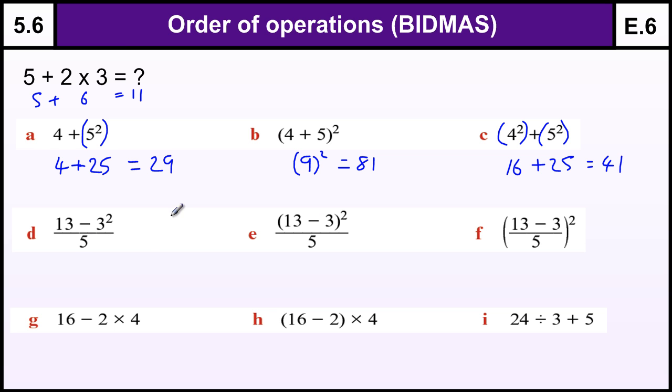Next one. Now we've got some fraction lines. Now fraction lines are awkward because they don't show you, but when they're written like this there is an invisible bracket around the top and the bottom, so you must work out the whole of the top before you divide by the bottom. So this top is 13 minus 3 squared. So we must do the 3 squared first, which is 9, and then do 13 minus the 9—not 9 minus 13, but 13 minus 9—which is 4.